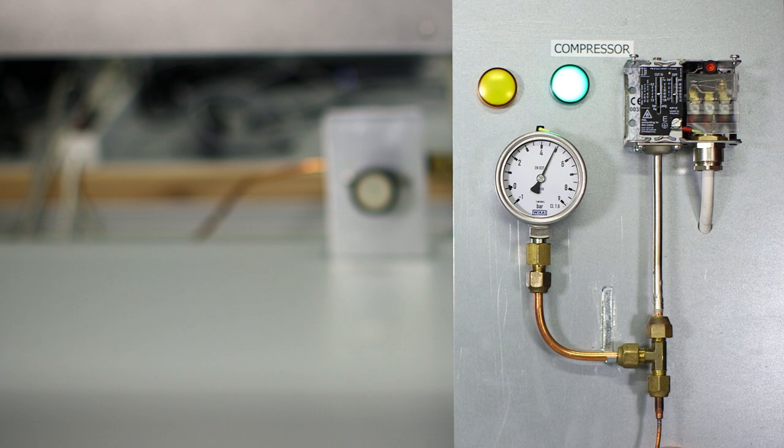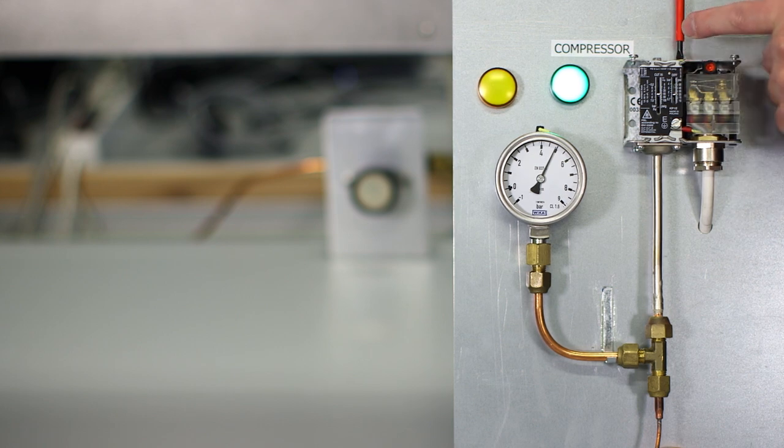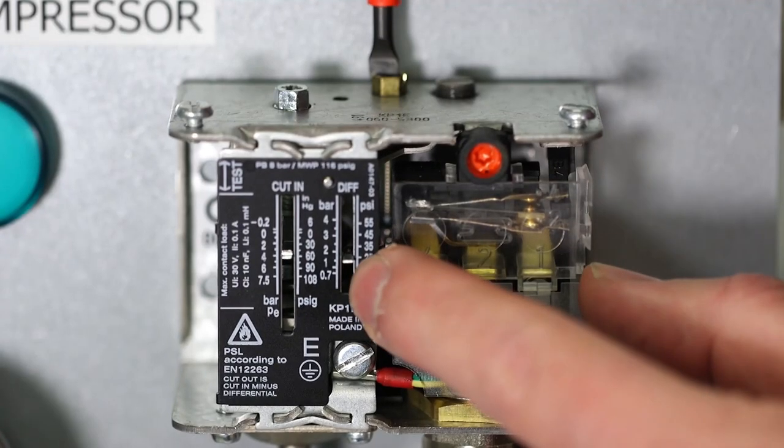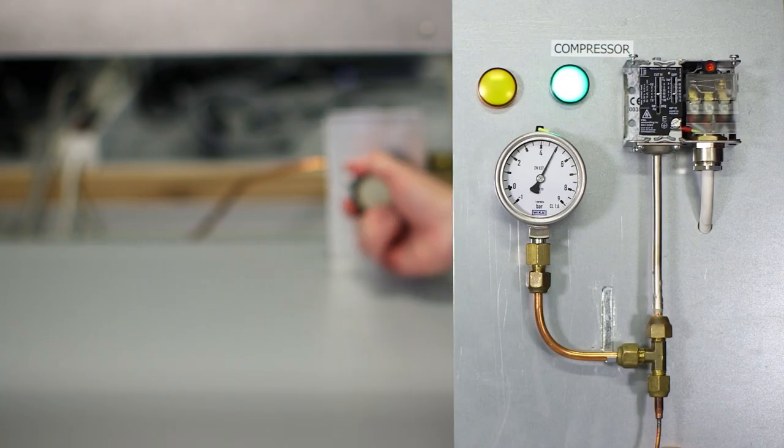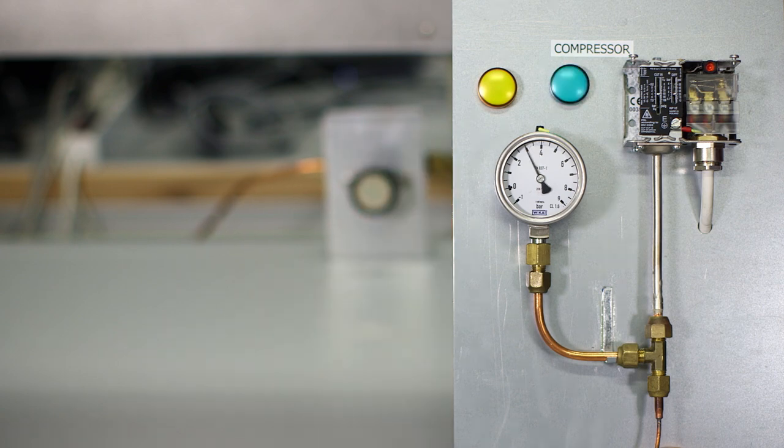So now we know that the compressor cuts in or starts at 5 bar. So how do we get it to cut out at 3 bar? On the Danfoss KP1 you set the difference, that is the difference from the cut in to the cut out. And that difference will in our case be 2 bar. So we need to set the diff, or the difference, to that. Now again remember that the scale that you see at the front is only indicative and you'll need to use your manifold to set the correct pressure.